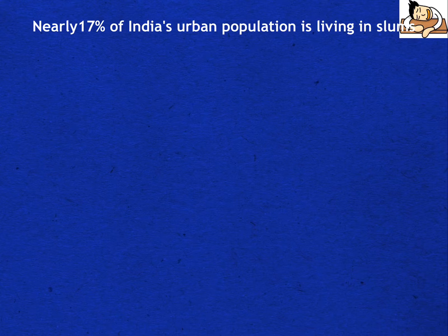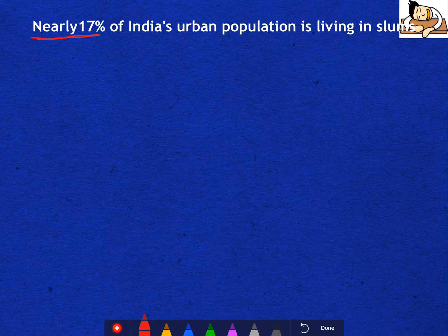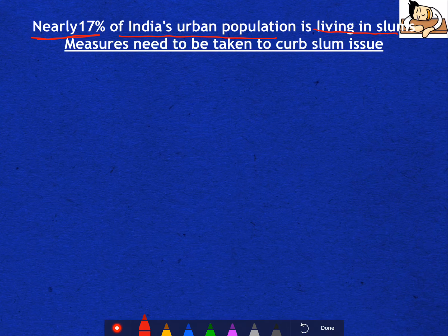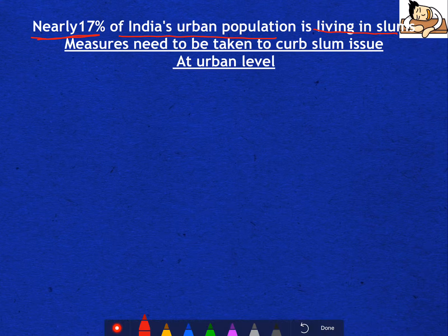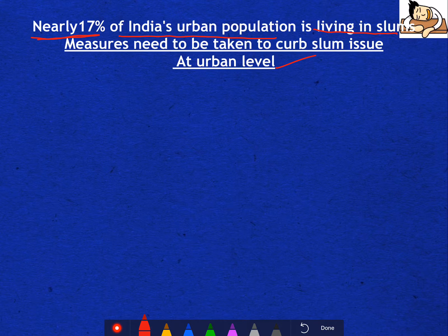In the introduction, you can quote a fact — that nearly 17% of India's urban population is living in slums. What measures does the government need to take? These measures are first at the urban level, next for slum upgradation, and next at the rural level. We will see on three levels what steps the government can take.